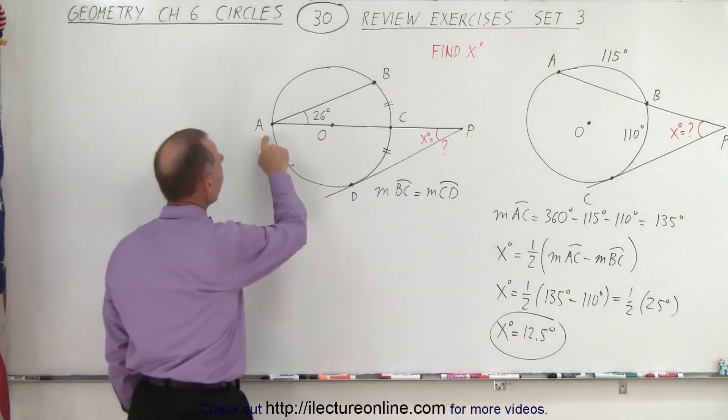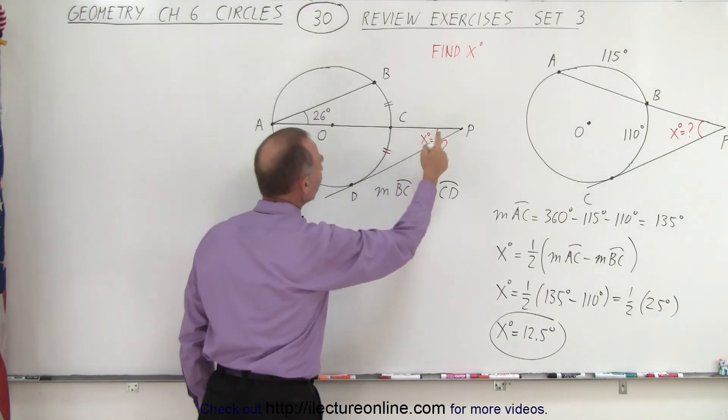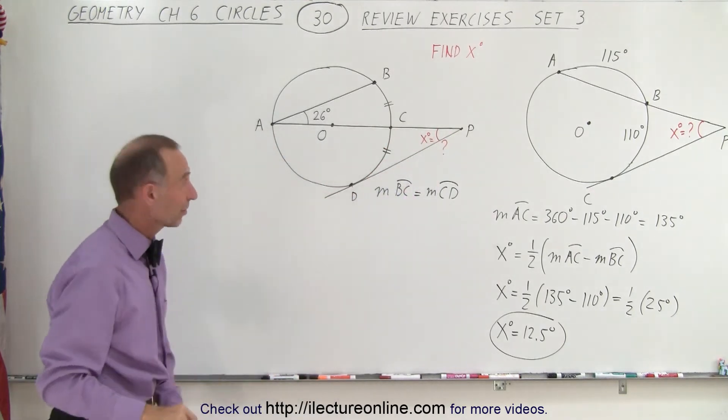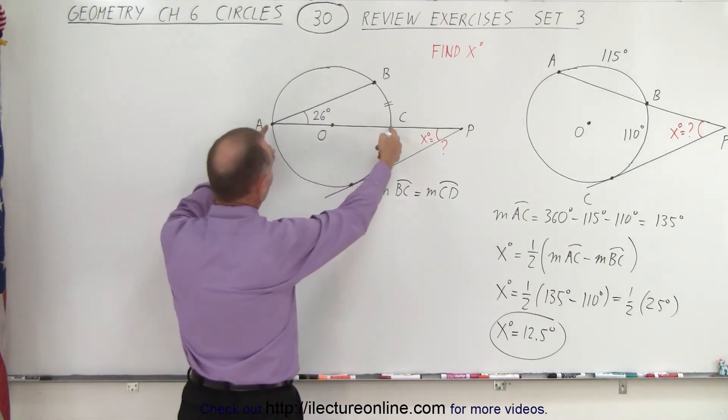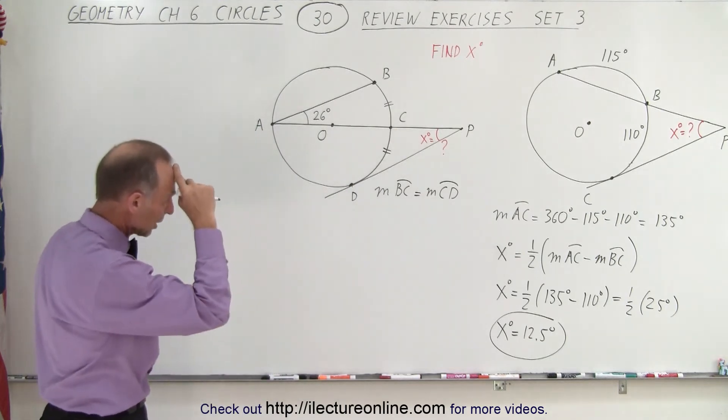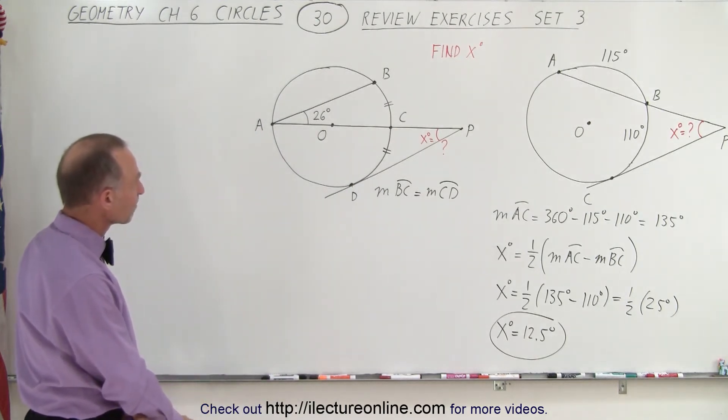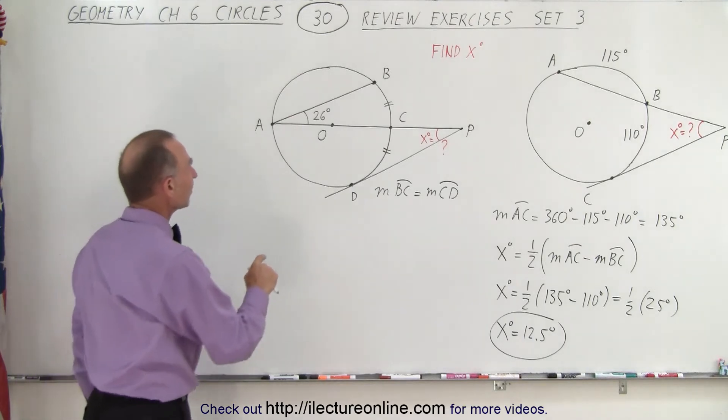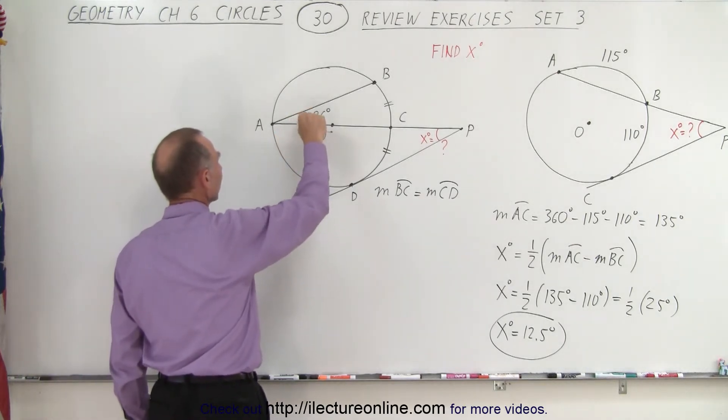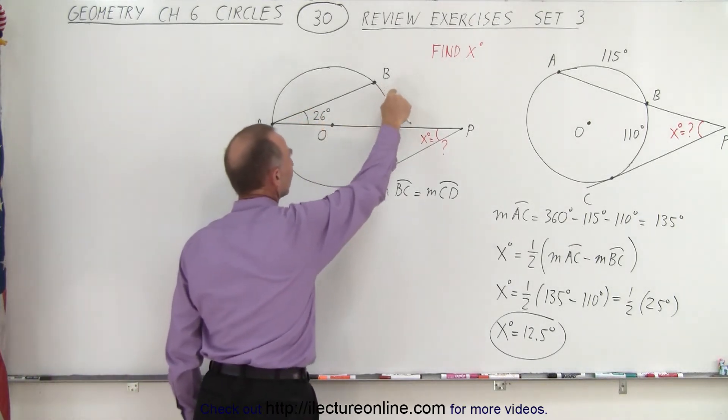We also know that the line from A to O to C to P, that is cutting, that represents from A to C, it represents the diameter of the circle because it goes right through the center of the circle.